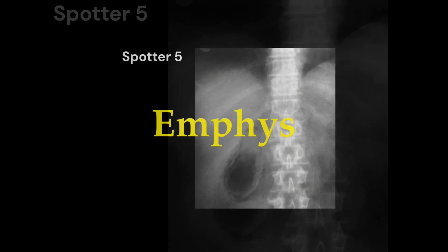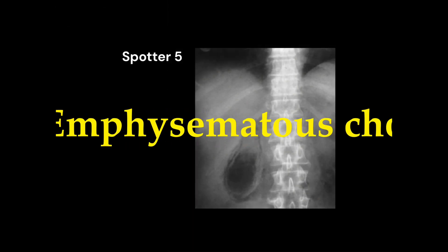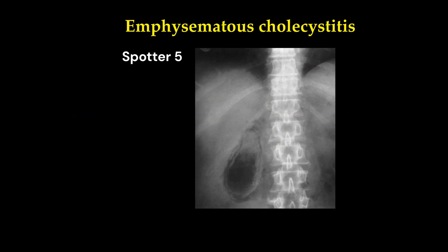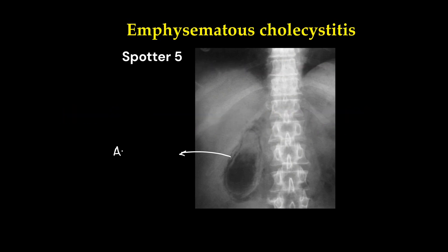This is emphysematous cholecystitis. We can see air foci in the gallbladder wall and lumen, in the shape of the gallbladder itself.